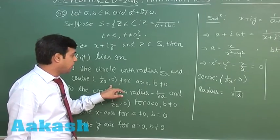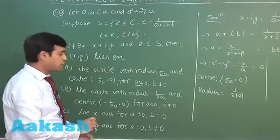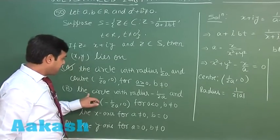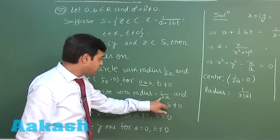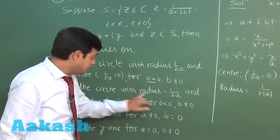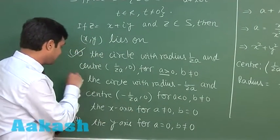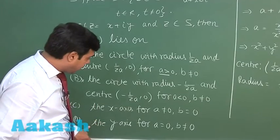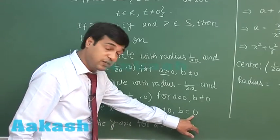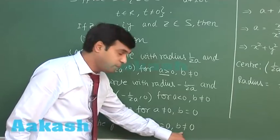Second says radius is -2a with a negative, but center is also changed, which is not correct, so option b is not. Options c and d are talking about the values when a is non-zero, b = 0, or a = 0, b is non-zero.